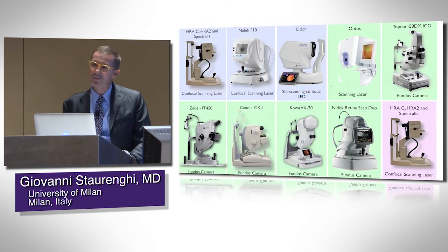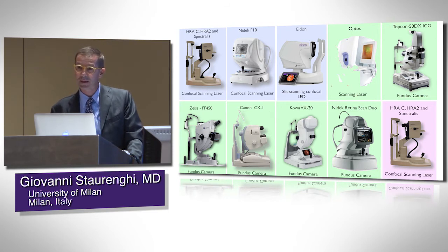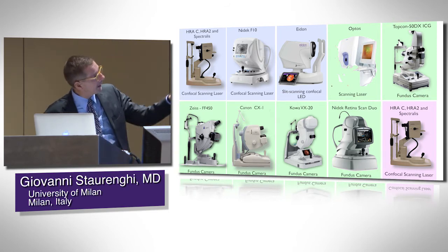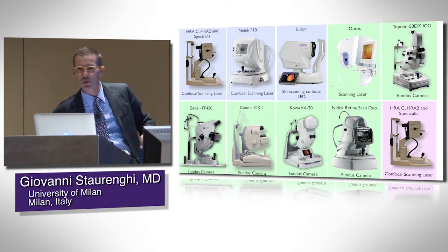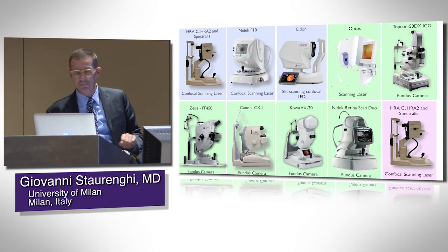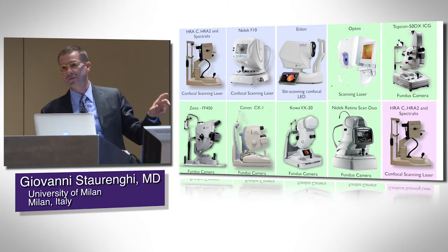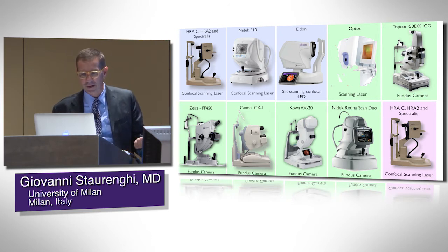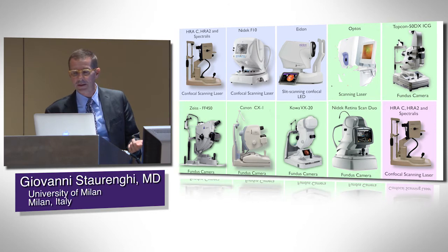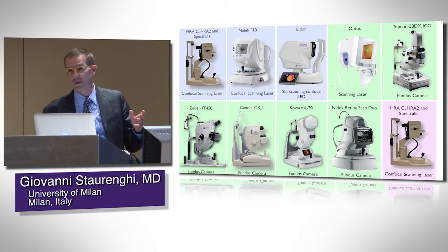When we speak about autofluorescence, we can see a series of instruments that can produce an autofluorescent image. I put a blue background, a green background, and a pink background — these are the three different types of autofluorescence you can get. The blue autofluorescence is done with the Spectralis, the Nidek, and the Adon.